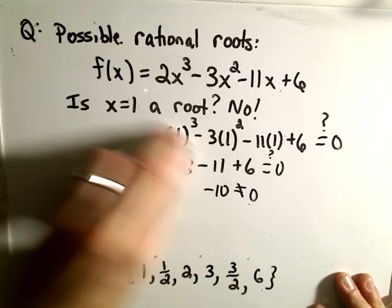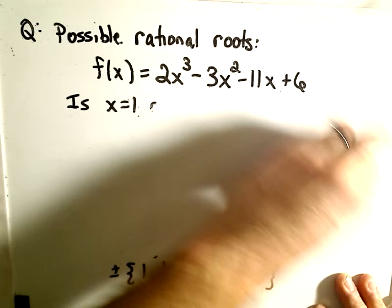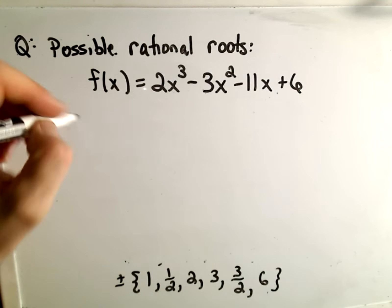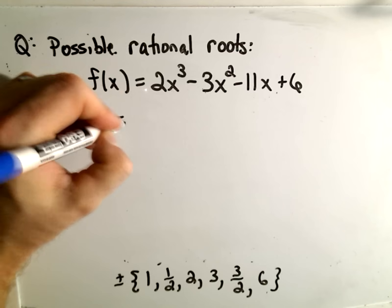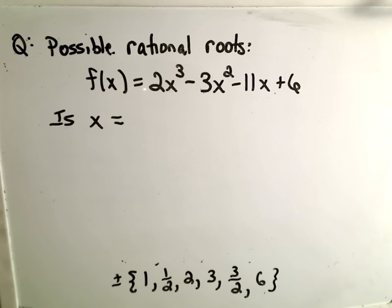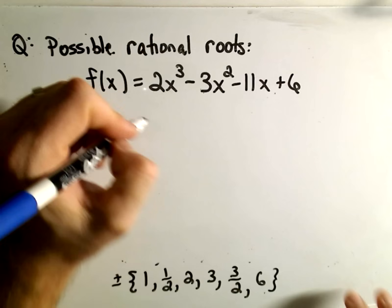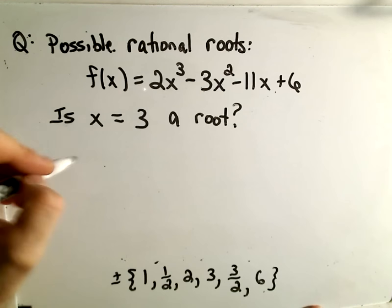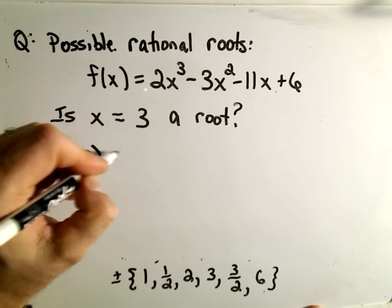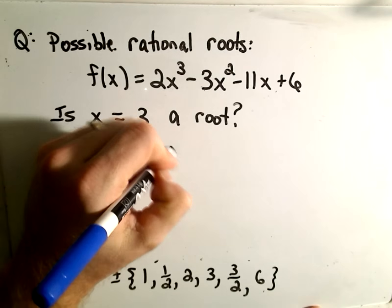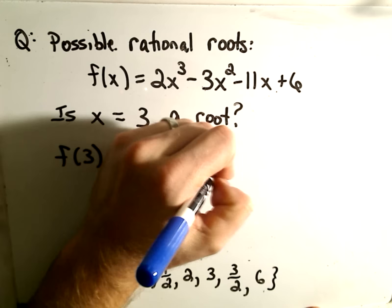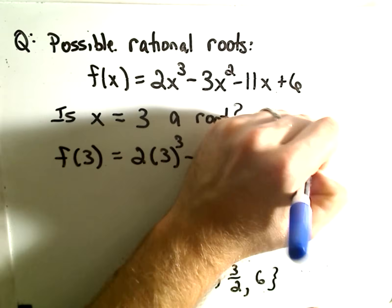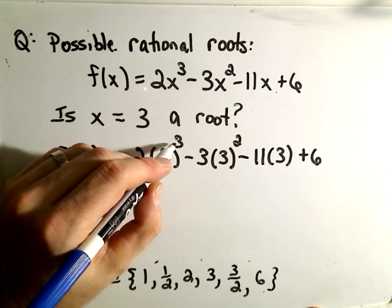Let's check one more, and then I'll tell you the solutions and you can check them out, because I won't have time to check them all. So maybe we can check is x = positive 3 a root? Let's check and see. If we plug 3 in, f(3) is 2(3)³ - 3(3)² - 11(3) + 6.